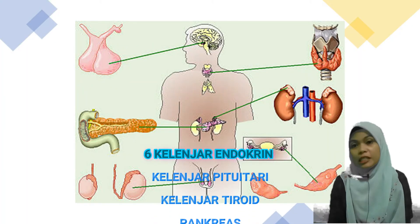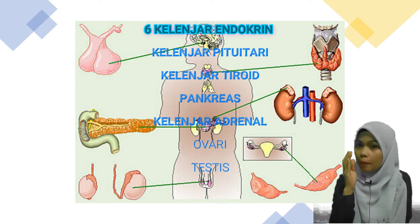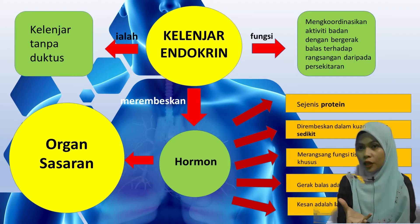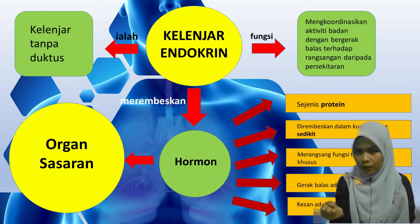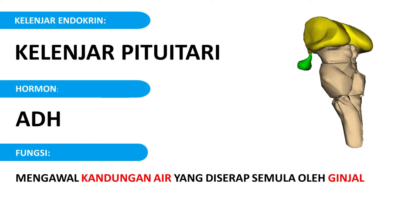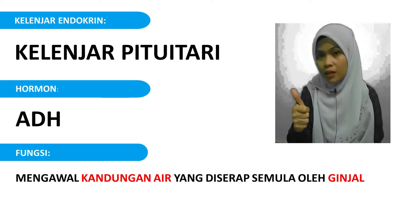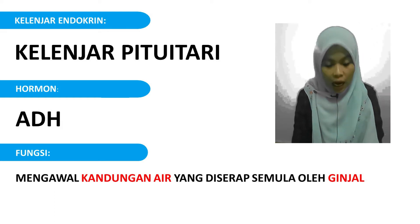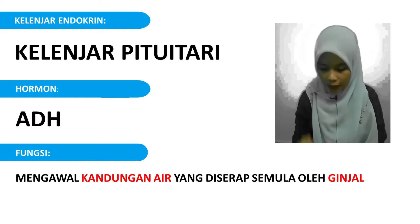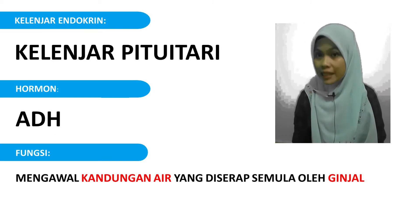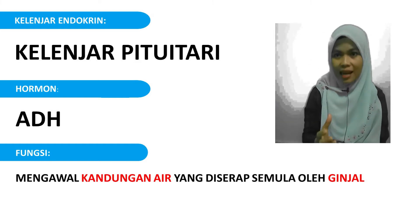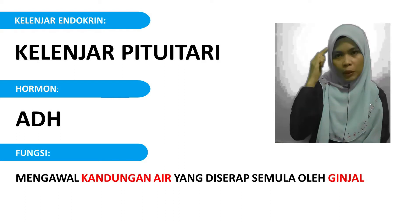Sekarang Cikgu nak explain pula tentang fungsi. Kita dah belajar ada 6 Kelenjar Endokrin tadi. Kelenjar Endokrin ini akan merembeskan hormon. Bagi Kelenjar Pituitary, kita ada 2 jenis hormon. Hormon yang pertama namanya adalah ADH atau hormon anti-duresis. Fungsinya adalah untuk mengawal kandungan air yang diserap semula oleh ginjal, iaitu mengawal air yang diserap oleh buah pinggang. Ini akan menentukan penghasilan air kencing. Jadi, Pituitary dikawal ADH.